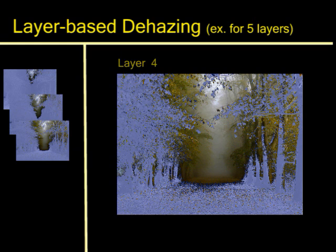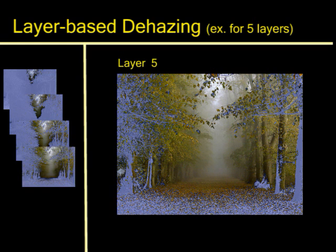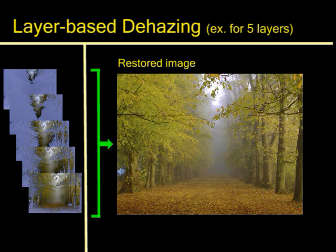Each of these images are obtained by removing a decreasing portion of the air-light constant color from the initial hazy image. Finally, these layers are blended into a single composite haze-free image.